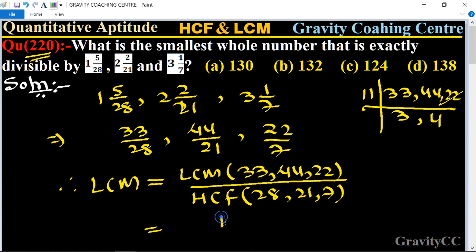So LCM is equal to 11 into 3 into 4, and HCF is 7. So it equals 132 upon 7.